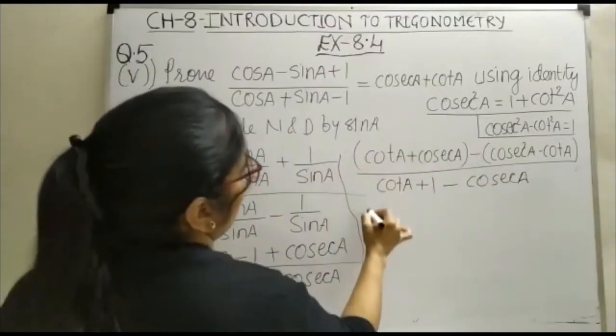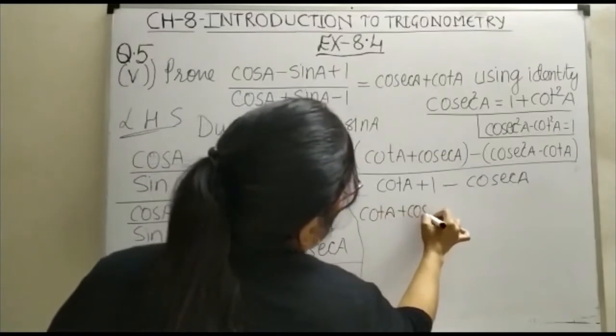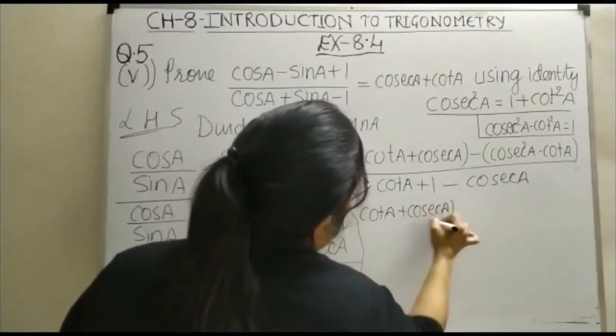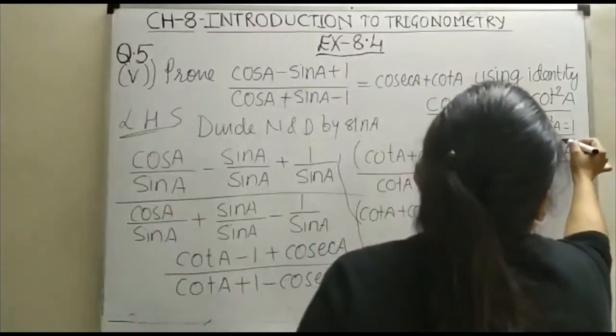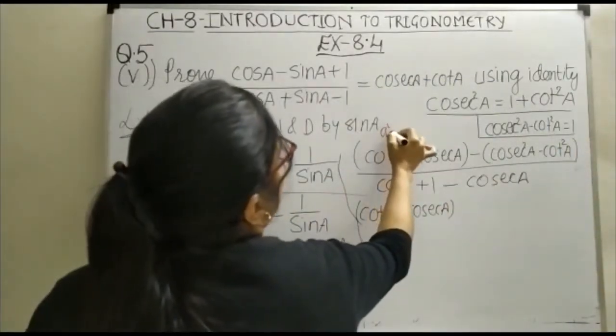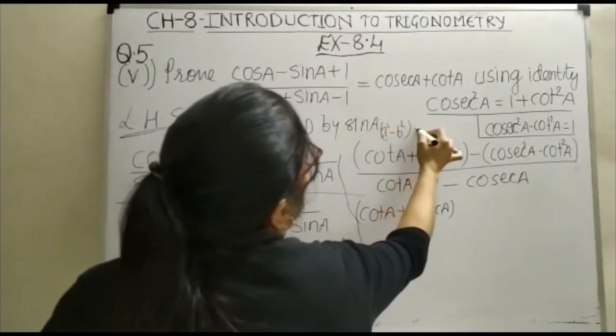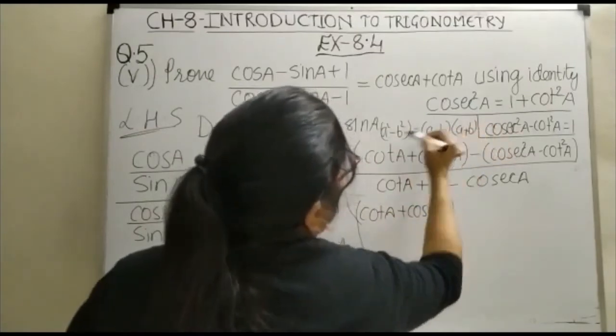Now, just see here. This will be cotA plus cosec square A. We will expand this term by A square minus B square. You know your A square minus B square is equal to A minus B and A plus B. Right.